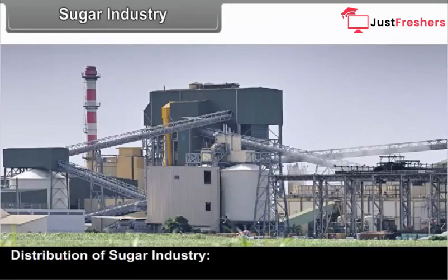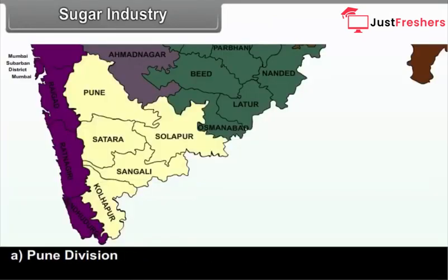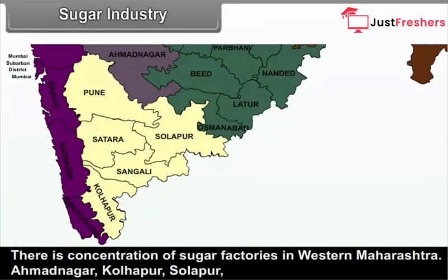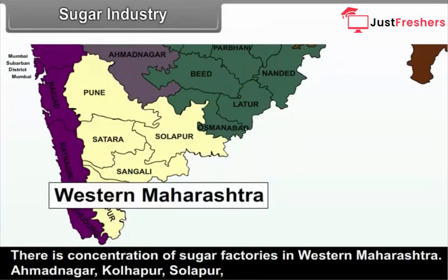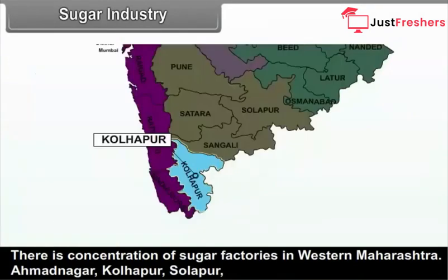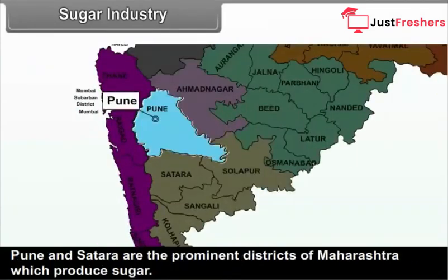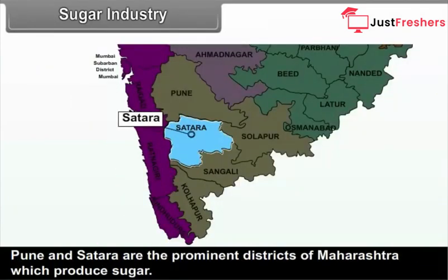Distribution of sugar industry: A. Pune Division — there is a concentration of sugar factories in Western Maharashtra; Ahmednagar, Kolhapur, Solapur, Pune and Satara are prominent districts which produce sugar. B. Nasik Division — sugarcane is produced in the Tapi Basin, so sugarcane is available on a large scale; sugar industries are set up in Dhule, Jalgao and Nandurbar districts.